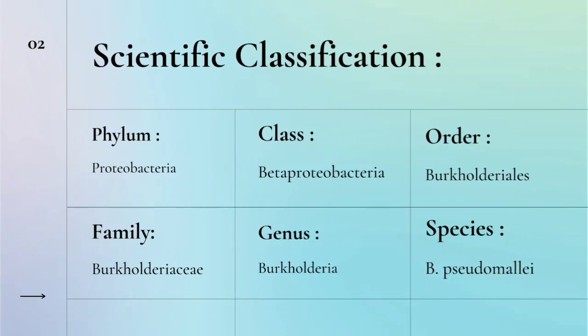Scientific classification: Burkhaldaria Sudumaliyae is a bacteria belonging to the phylum Proteobacteria, class Beta Proteobacteria, order Burkhaldarials, family Burkhaldariaceae, genus Burkhaldaria, and species Burkhaldaria Sudumaliyae.